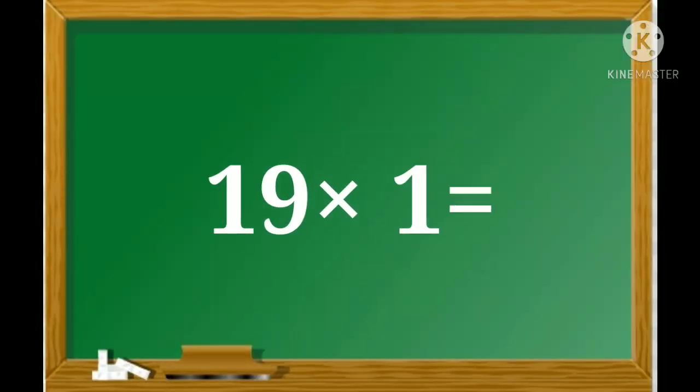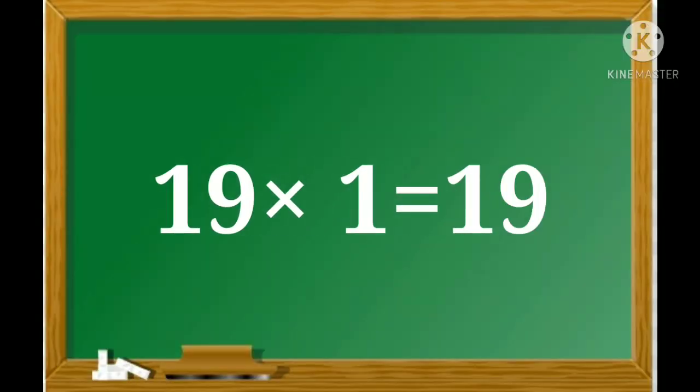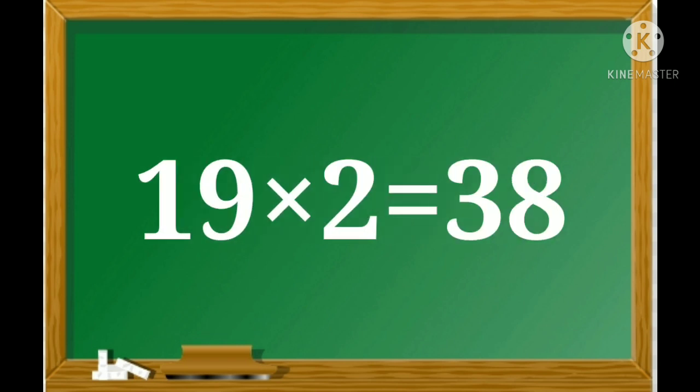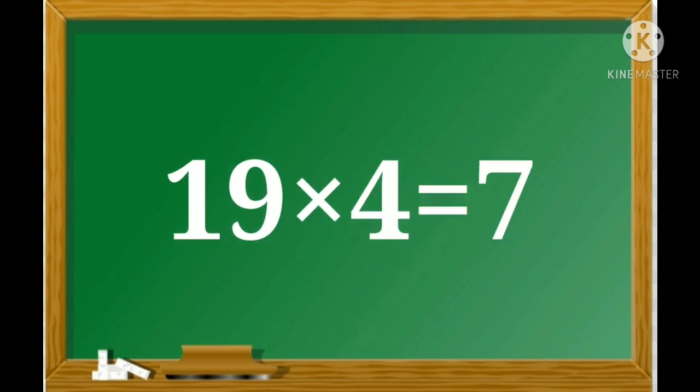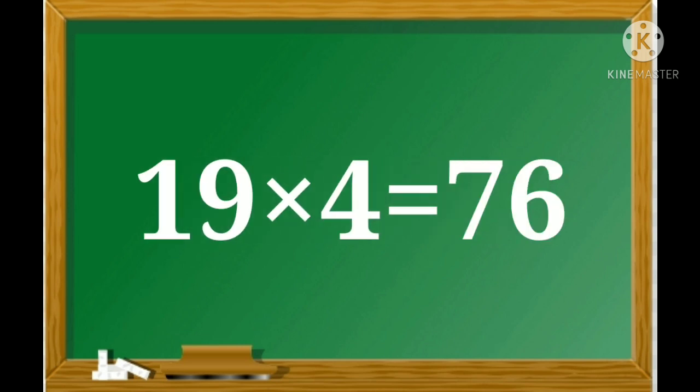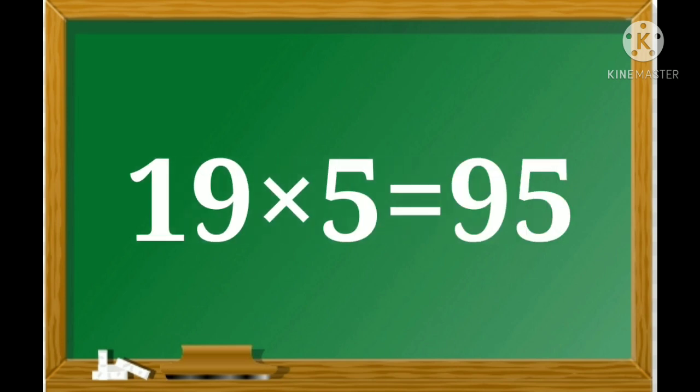19 ones are 19. 19 twos are 38. 19 threes are 57. 19 fours are 76. 19 fives are 95.